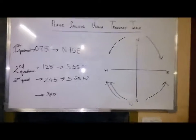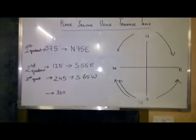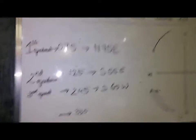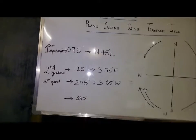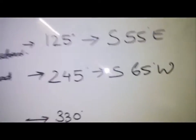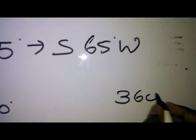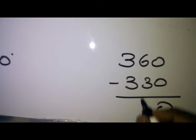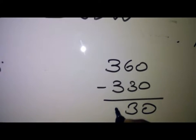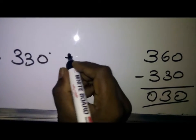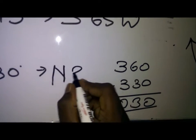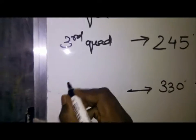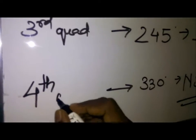Now the last one, it is 330. We know that 330 is in the fourth quadrant. We check the direction, it is from north to the west. So we are going to subtract 330 from 360. 360 minus 330 gives you 30. So it will be north 30 to the west, and this will be the fourth quadrant.